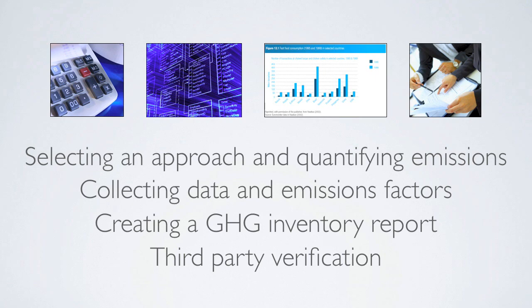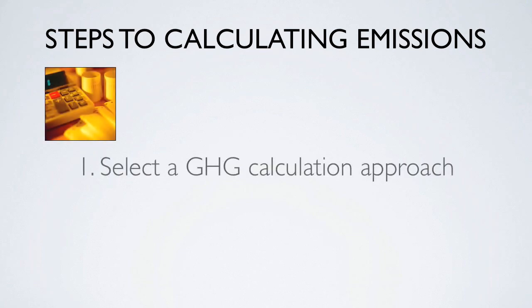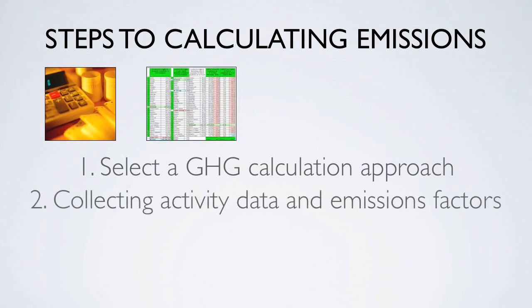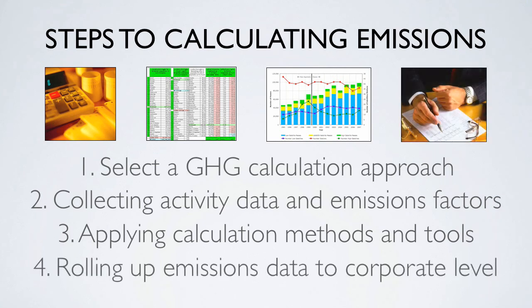Once the inventory boundary has been established, calculating emissions is a straightforward four-step process. The first step is selecting a calculation approach. The second step is collecting activity data and emission factors. The third step is applying calculation methods and tools. And the final step is rolling up the emissions data to the corporate, institutional, or entity level.